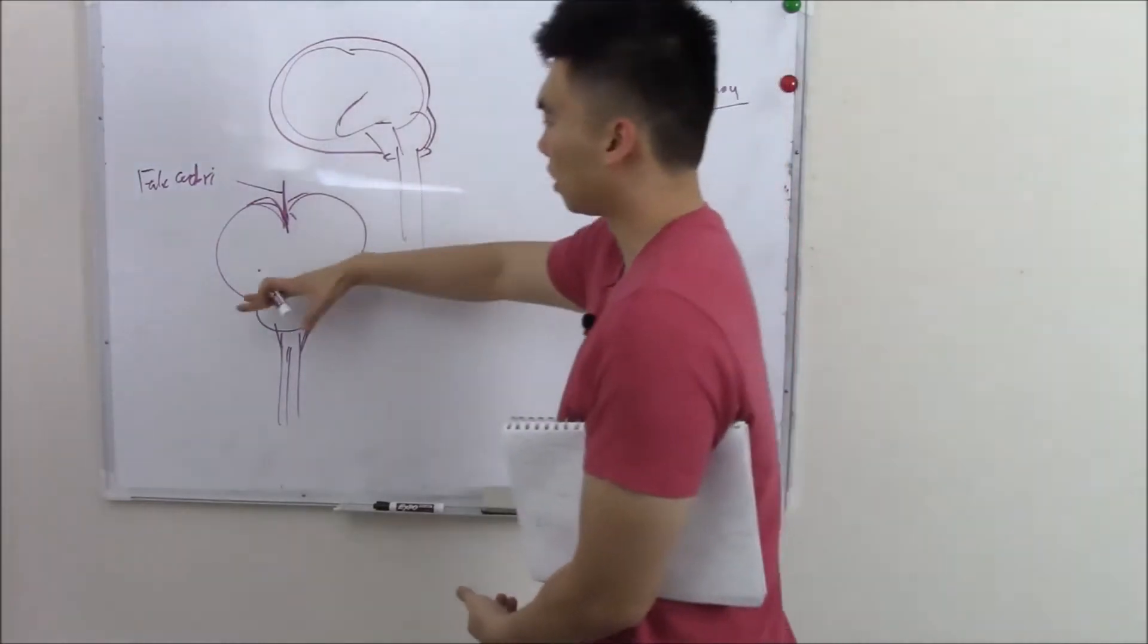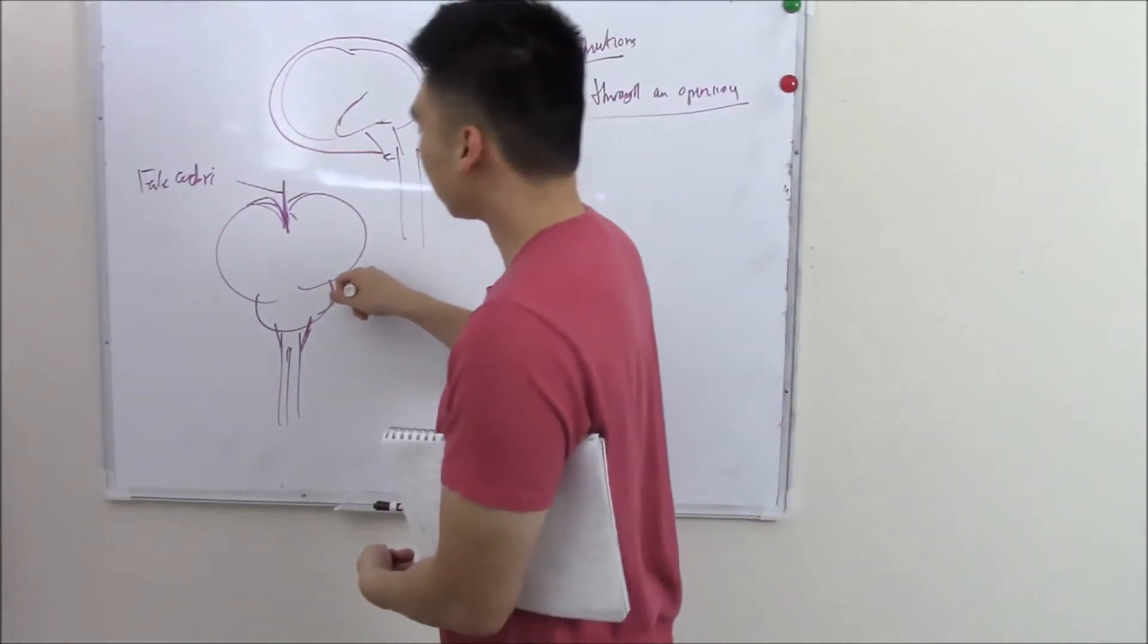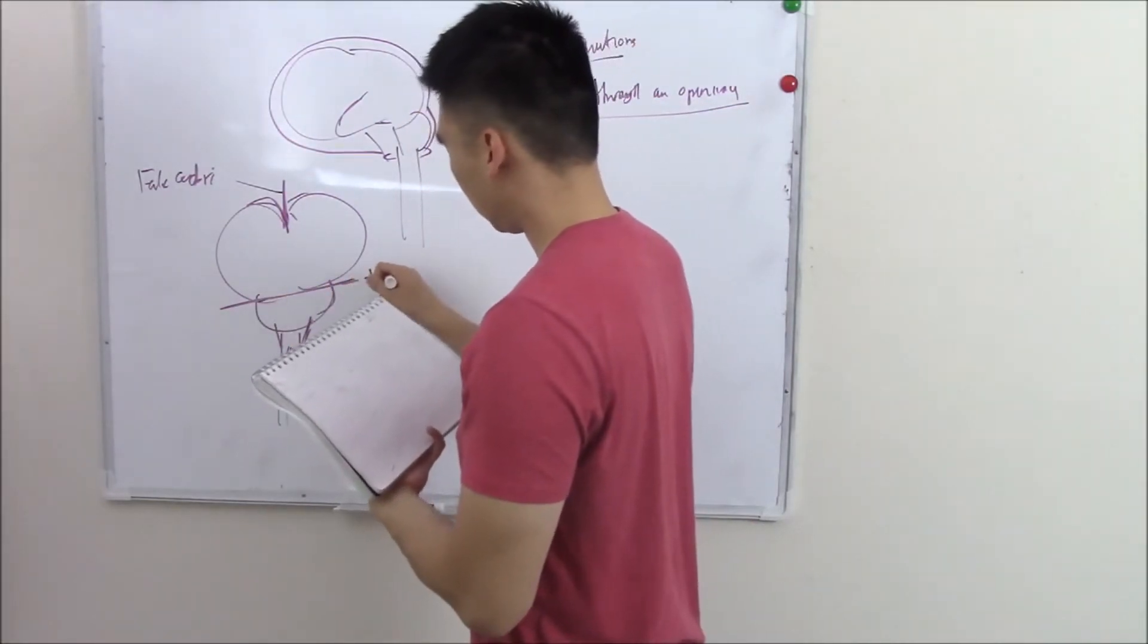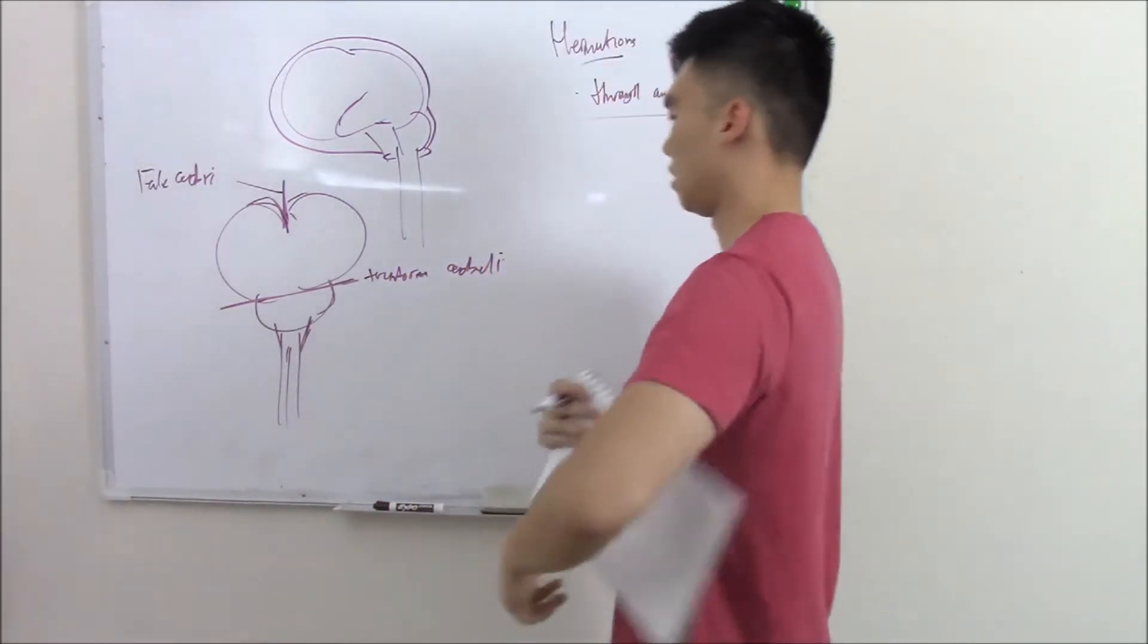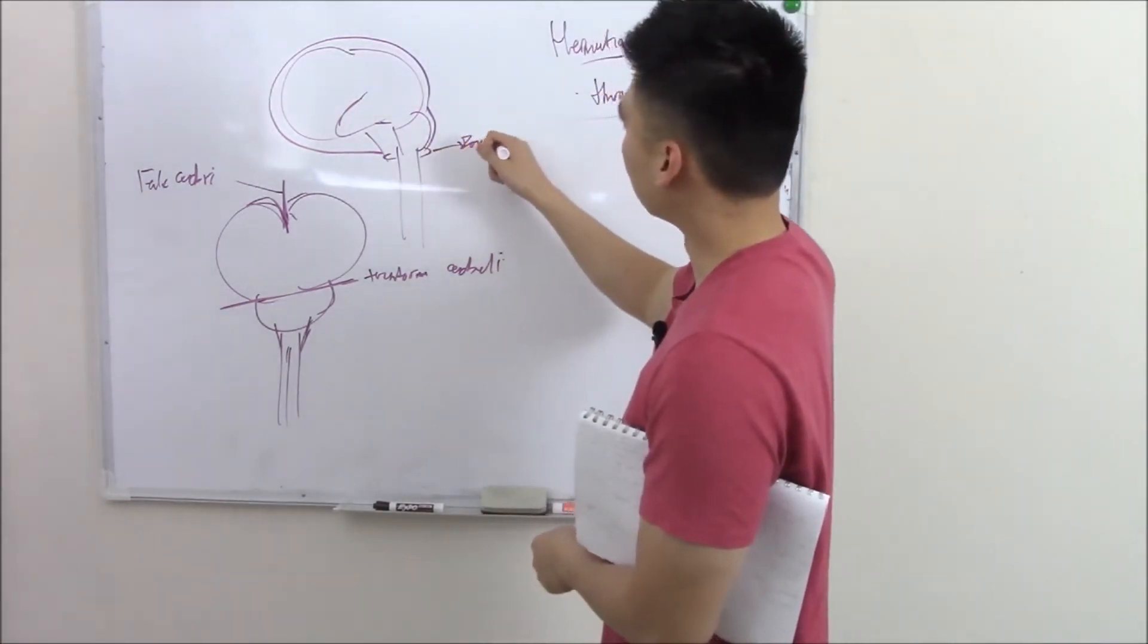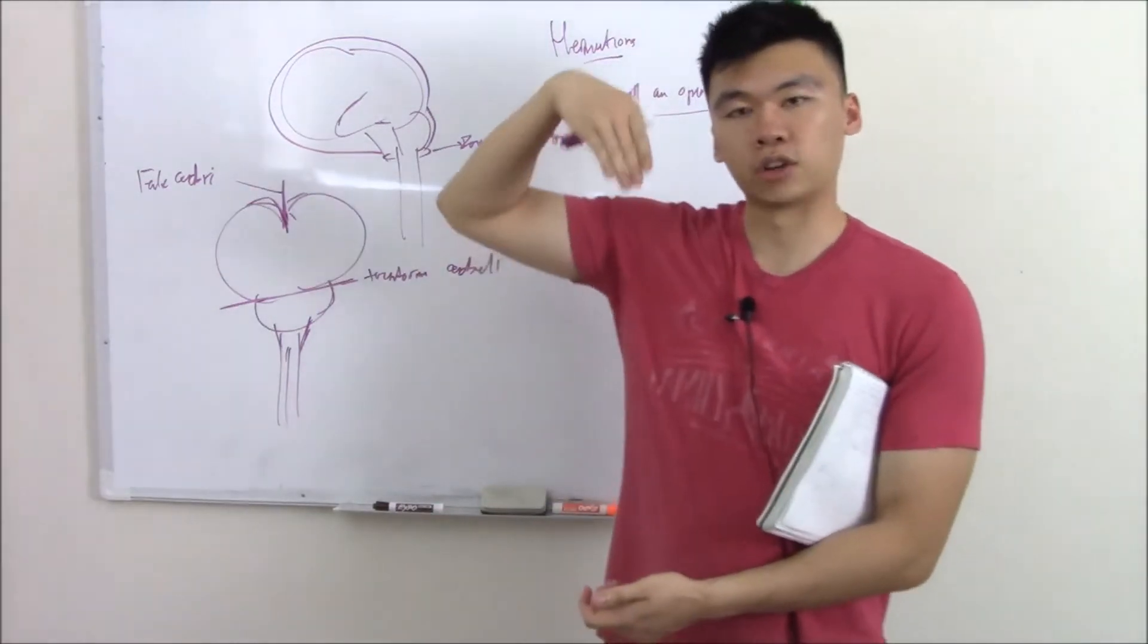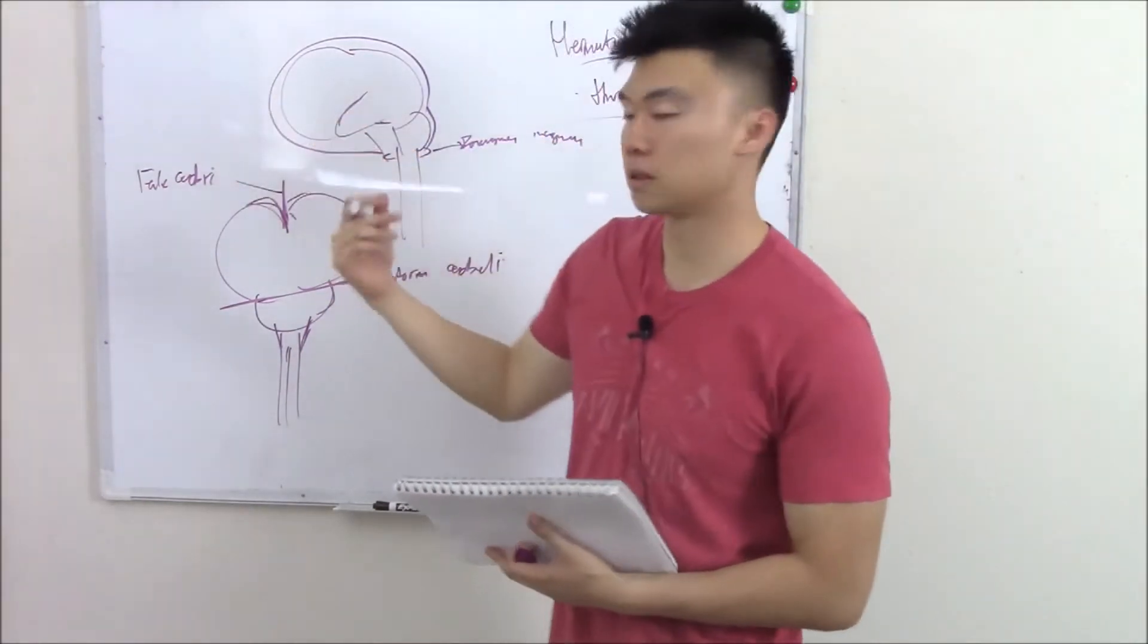There's also something that keeps the cerebellum apart from the occipital lobe. There's another dura invagination, the tentorium cerebelli. These three structures—the foramen magnum, the tentorium cerebelli, and the falx cerebri—are going to be our three structures where our brain can herniate through. The most common is your brain herniating through this falx cerebrae.